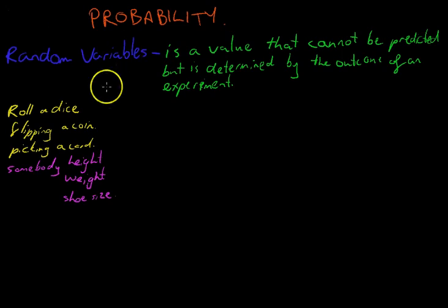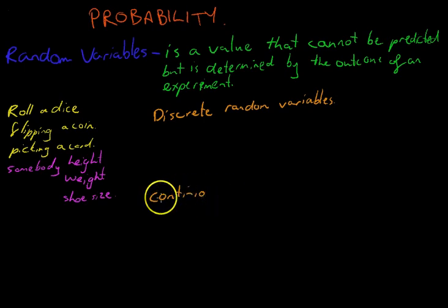All of this has been to define random variables. It's a value that cannot be predicted but is determined by the outcome of an experiment. Now we also need to talk about types of random variables. There's two types: discrete random variables and continuous random variables.